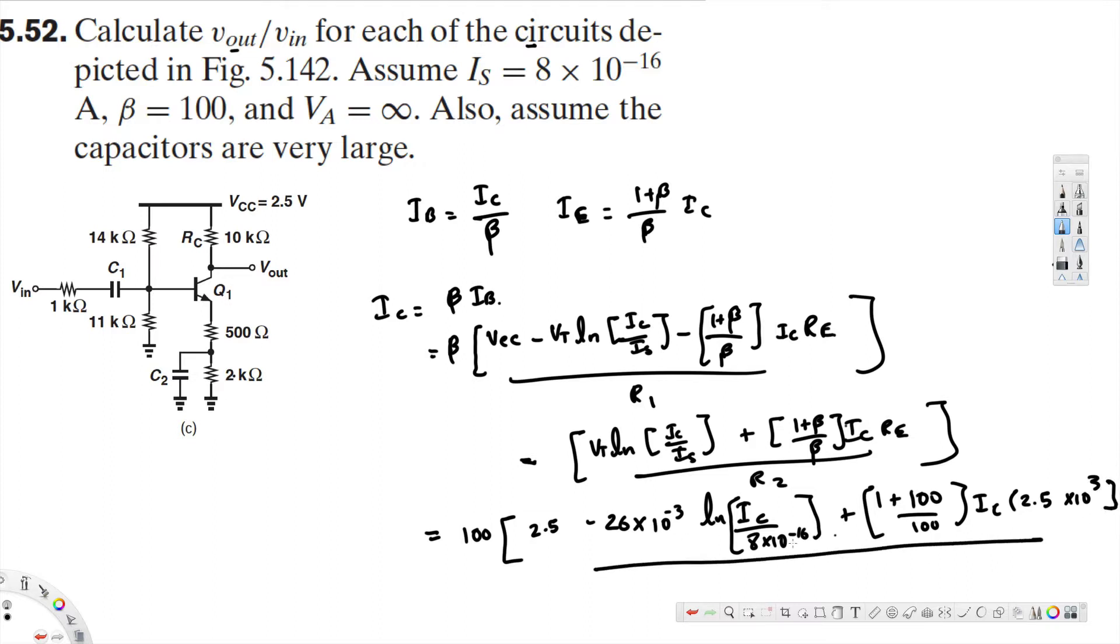Divided by R1, R1 is 14 kilo ohm, that is 14 times 10 to the power of 3. Minus V_T, that is 26 times 10 to the power of minus 3 ln of I_C over I_S, I_C over I_S is 8 times 10 to the power of minus 16.